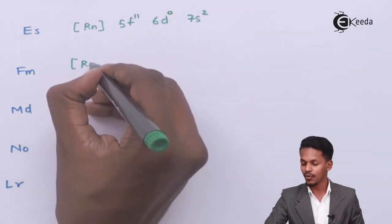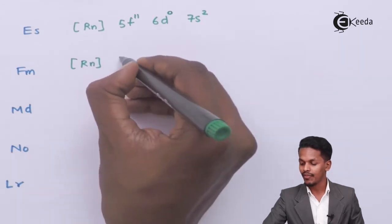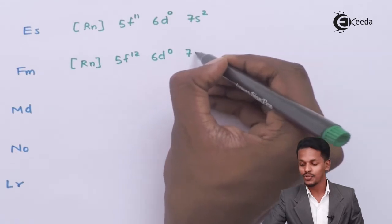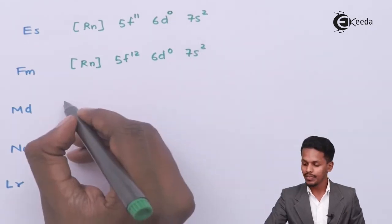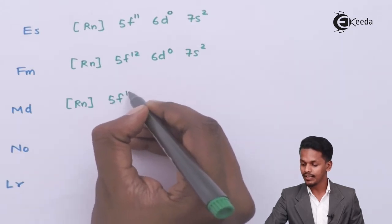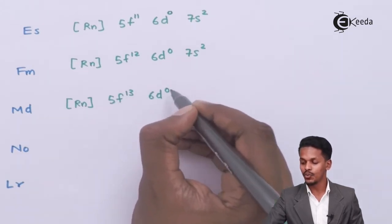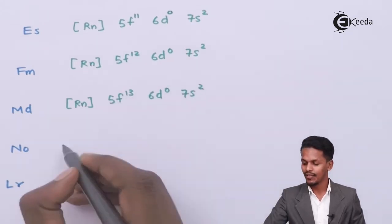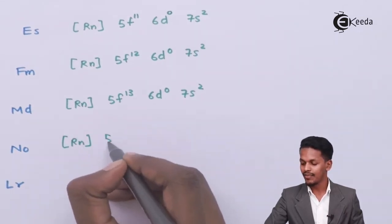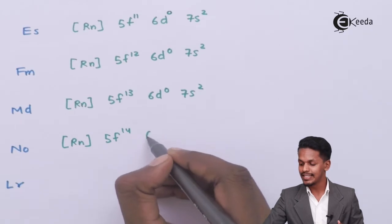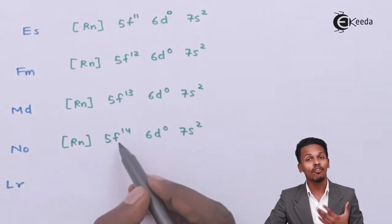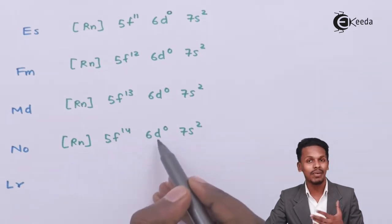For fermium, the configuration is [Rn] 5f¹² 6d⁰ 7s². For mendelevium, it is [Rn] 5f¹³ 6d⁰ 7s². For nobelium, it is [Rn] 5f¹⁴ 6d⁰ 7s², because the f orbital is now completely filled and the d orbital is vacant, giving extra stability.